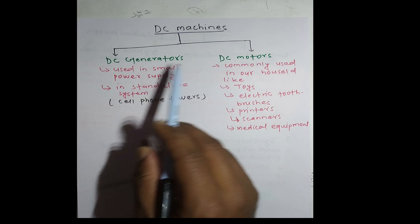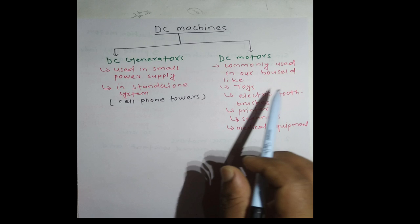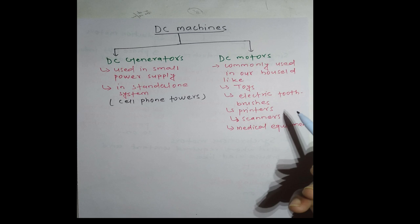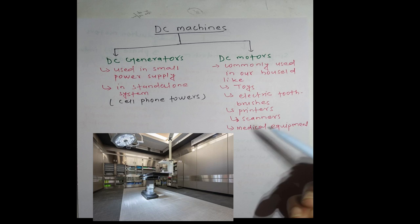DC motors are commonly used in our households, like in toys, electric toothbrushes, printers, scanners, medical equipment, and so on.